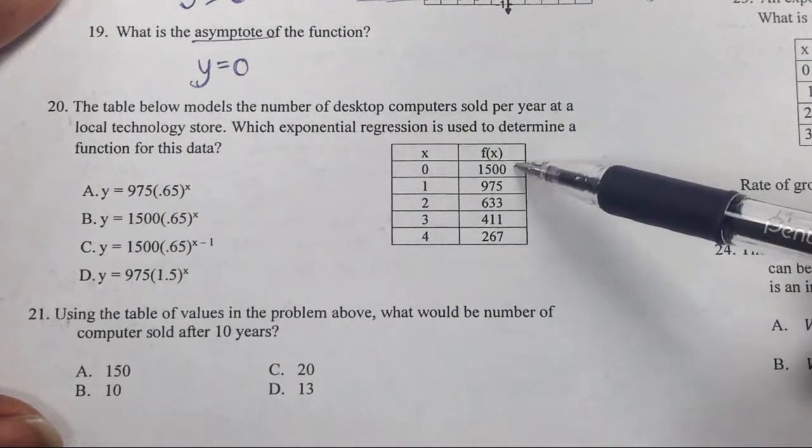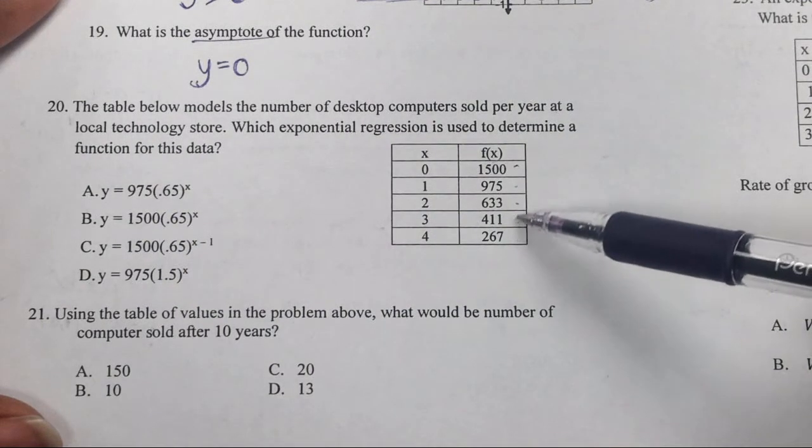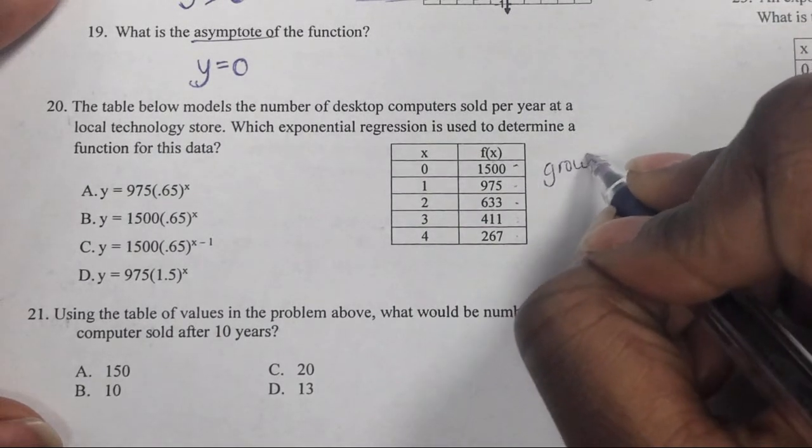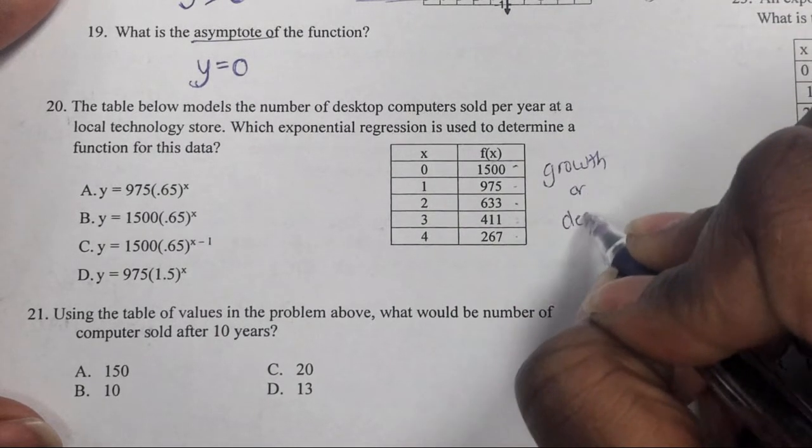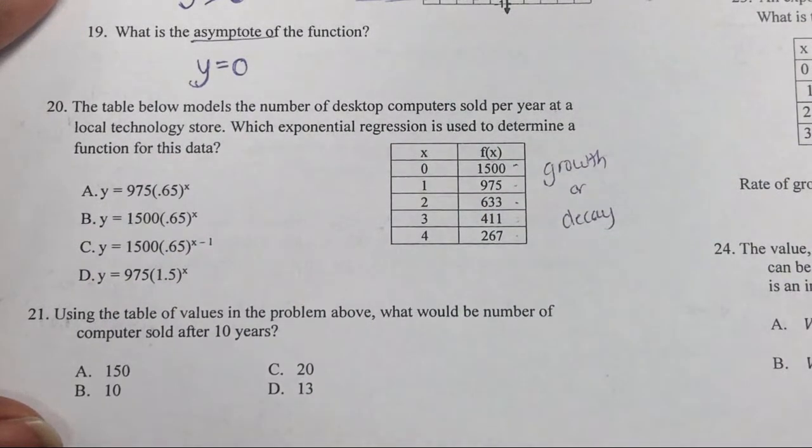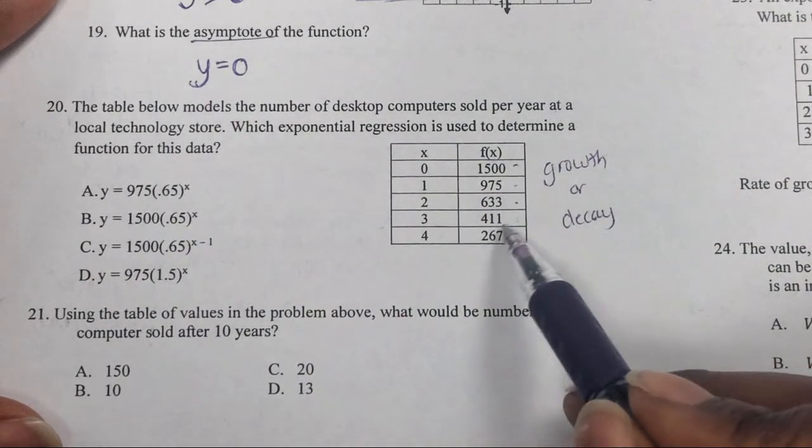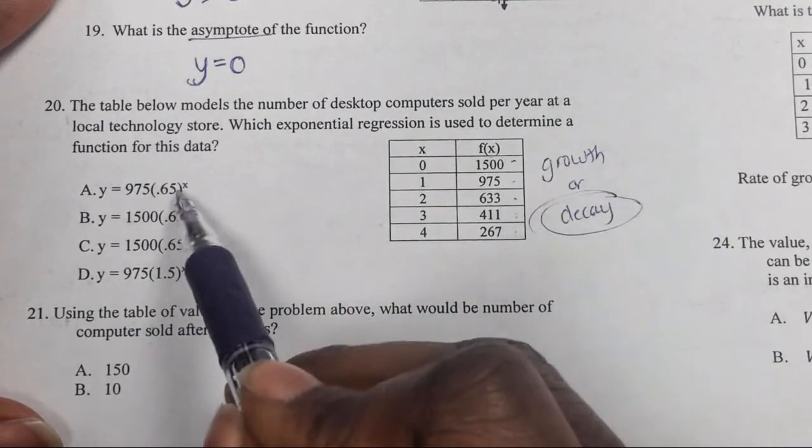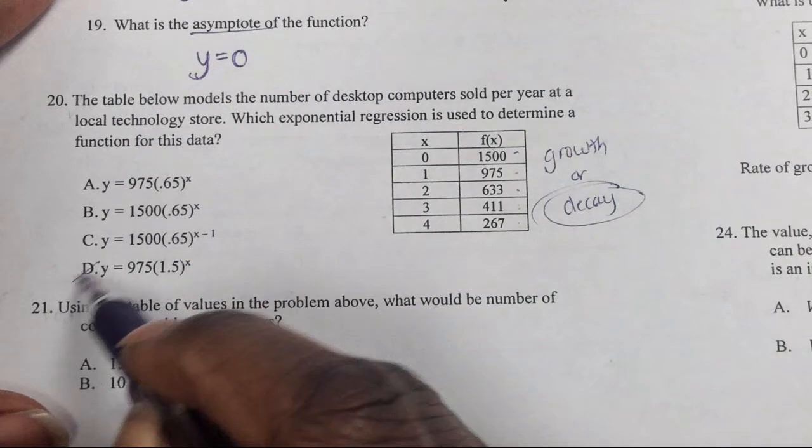That's one question you should keep asking yourself: is it growth or decay? Either by reading it or by looking in this table, this is definitely decay. So we know if it's decay, the rate has to be less than one.